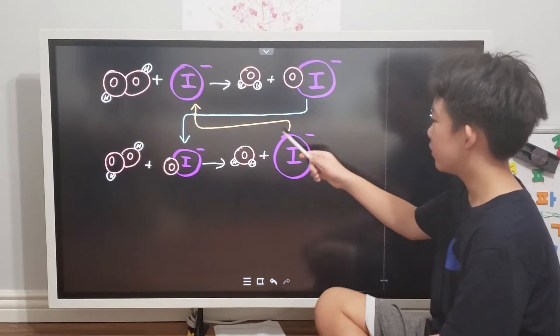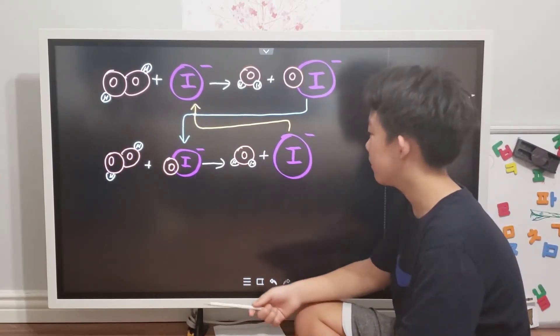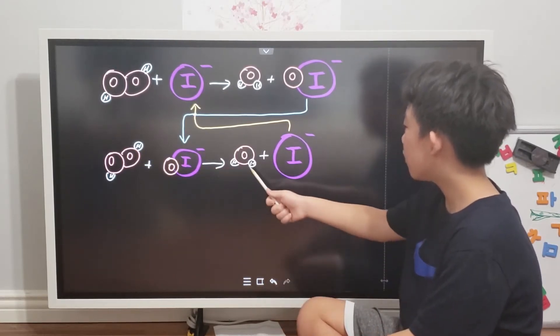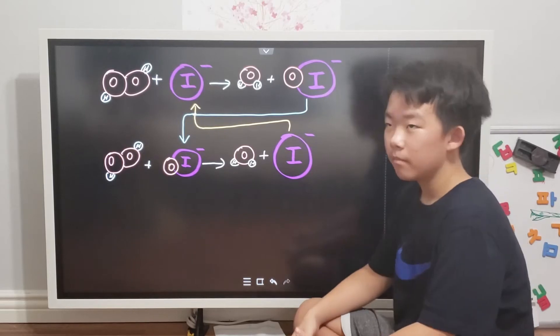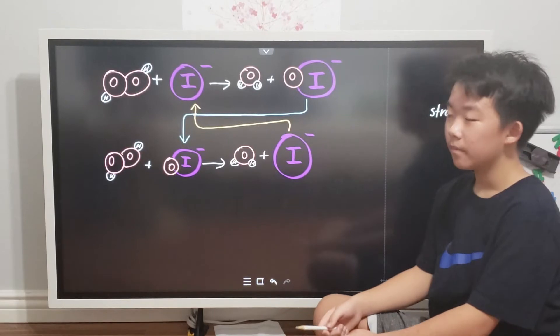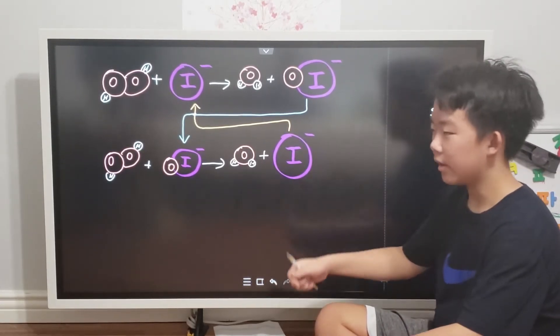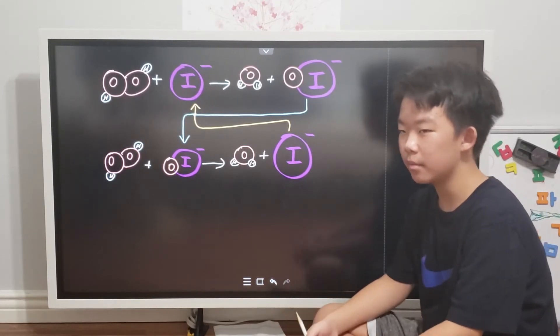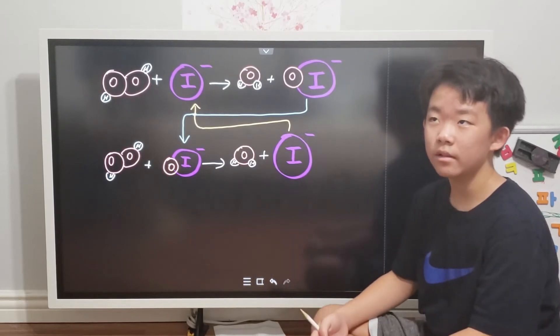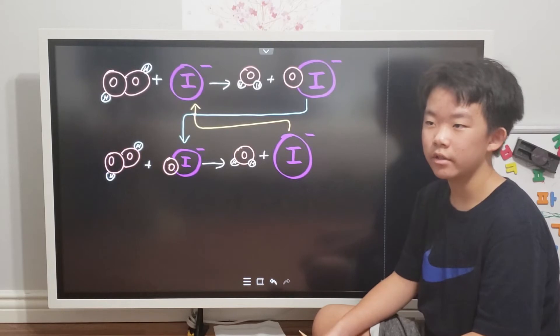However, this ion is short-lived because it quickly fuels in another reaction, where another hydrogen peroxide reacts with the hypoiodite to form water and iodide. Because it's back to iodide, it can now continue fueling in this reaction. And then the reaction continues. Because the iodide ion isn't actually used up, it's called a catalyst. Like I said in the last video, catalysts just speed up the reaction. However, they don't actually get used up.